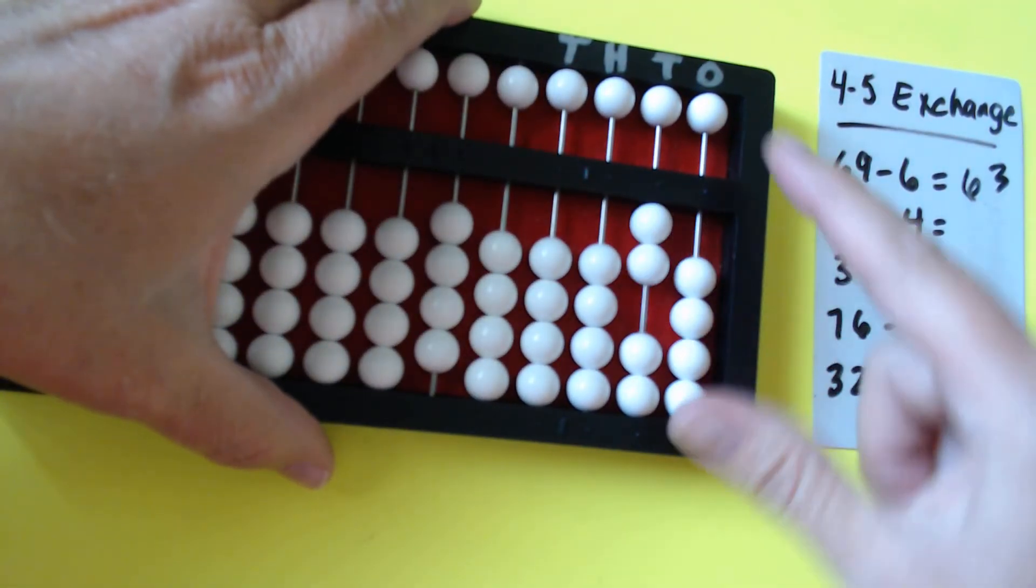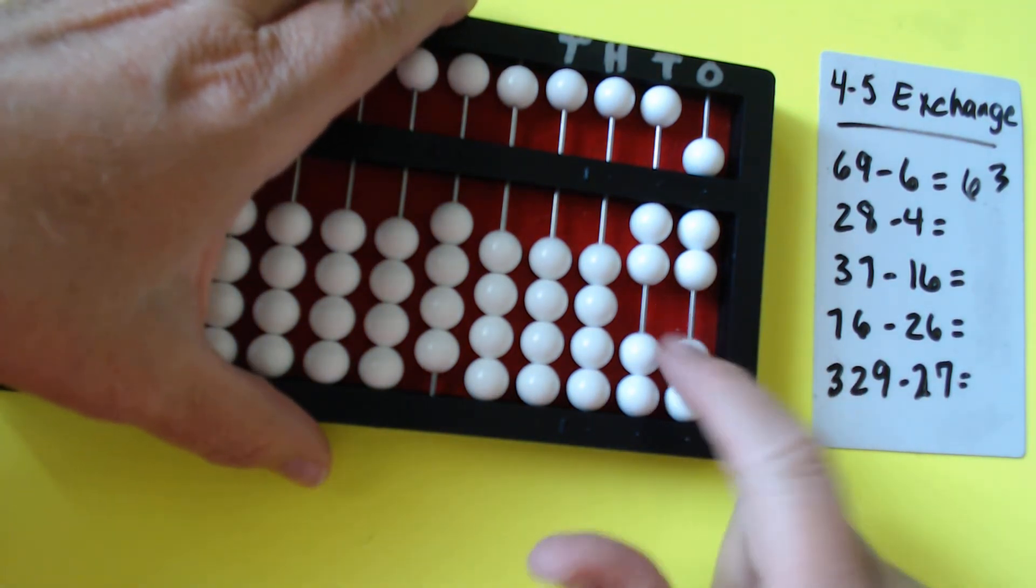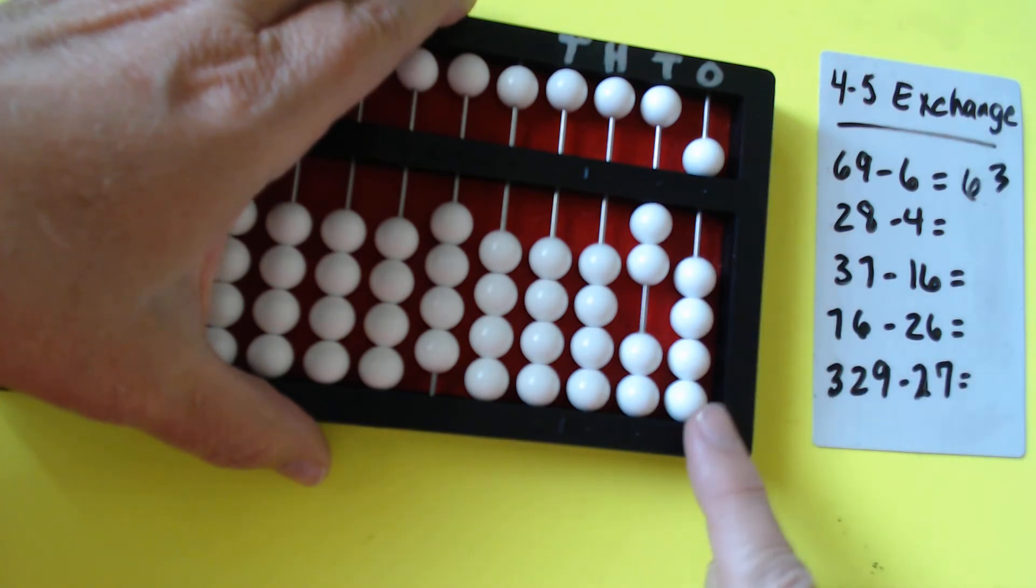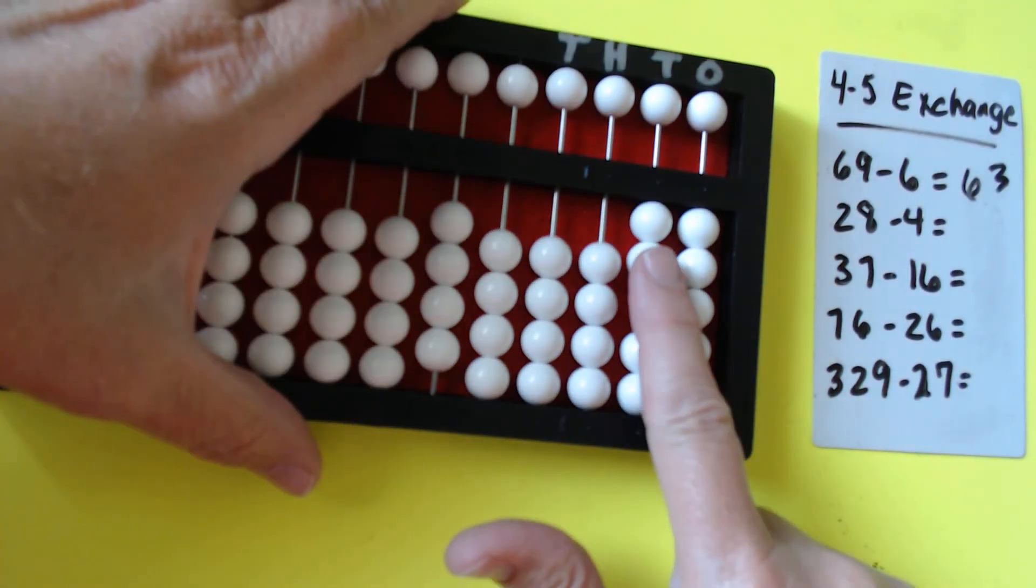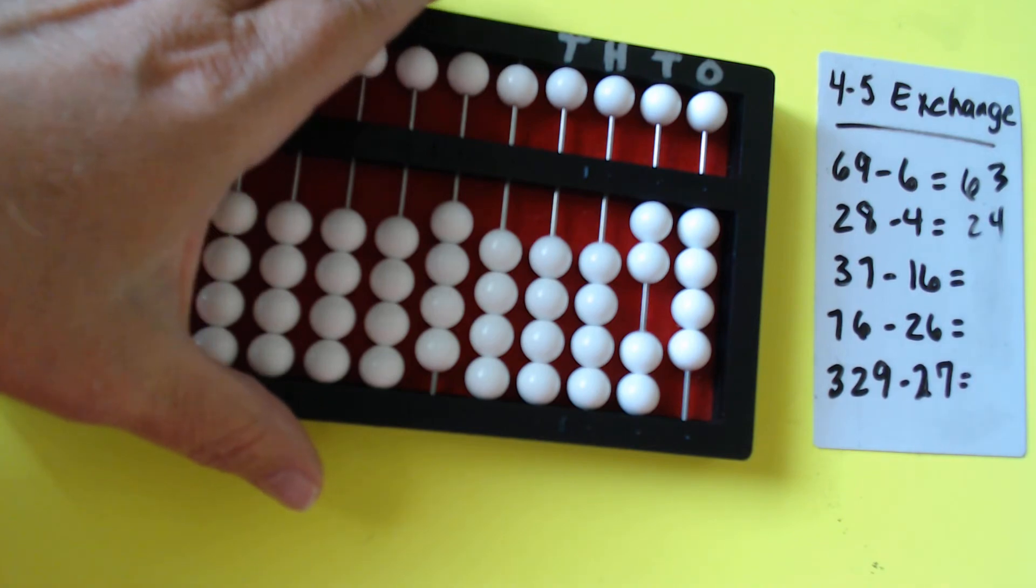28 minus 4. So we start here to take away 4: 1, 2, 3, we're out. So we're going to make that swish all the way up, carrying all four of these beads and the 5 bead. And that's our four counts. That gives us 24. Clear.